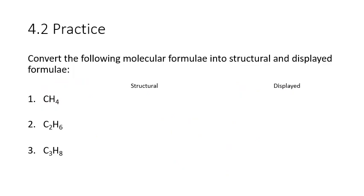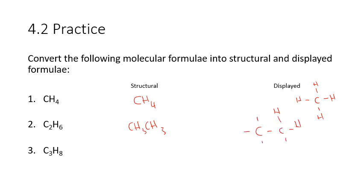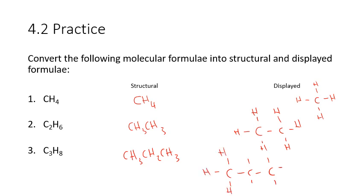A good idea is to practice converting between molecular formula, structural formula, and displayed formula. Starting with CH4: the structural formula is already CH4 since there's only one carbon, and the displayed formula shows the four covalent bonds between the carbon and the hydrogens. For C2H6, the structural formula is CH3 CH3, and the displayed formula shows each carbon bonded to three hydrogens and a single bond between the two carbons. For C3H8, it's CH3, CH2, CH3, with three carbons surrounded by hydrogens — the middle carbon is only bonded to two hydrogens because it has two single bonds to the two adjacent carbon atoms.